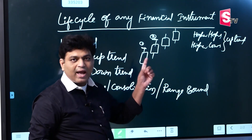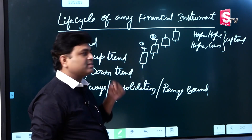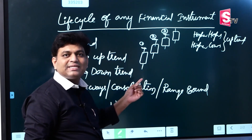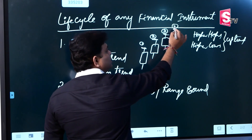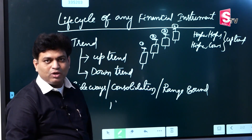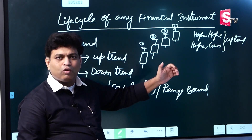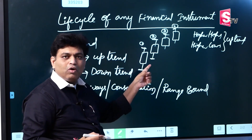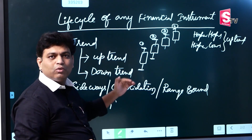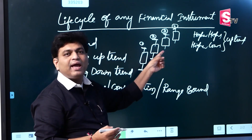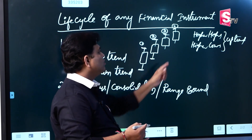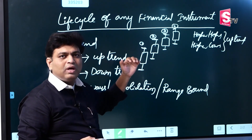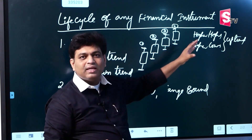When we compare candles, the first candle has a high and the second candle has a higher high. By comparing candle one and candle two, we see a higher high. Similarly, when comparing lows, if the second candle's low is higher than the first candle's low, we call that a higher low. Technically, we call this pattern higher highs and higher lows, which forms in an uptrend.